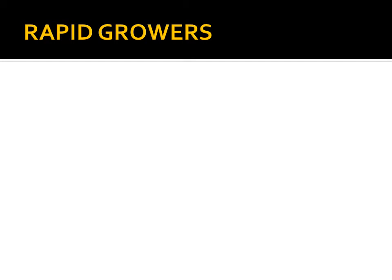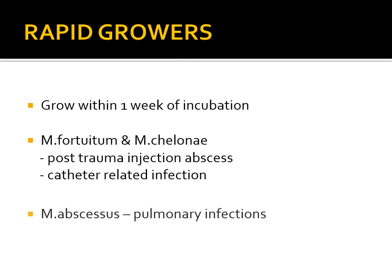Rapid growers — while Mycobacterium tuberculosis takes six to eight weeks to grow, these mycobacteria are rapid and can grow within a week. Mycobacterium fortuitum and Mycobacterium chelonae are important rapid growers causing post-trauma injection abscesses or catheter-related infections. Mycobacterium abscessus can cause pulmonary infections.